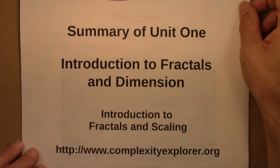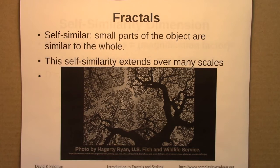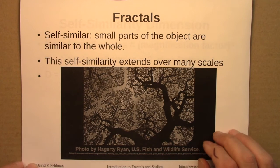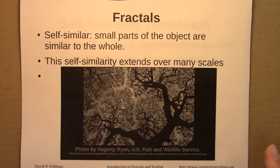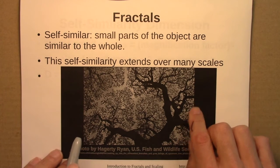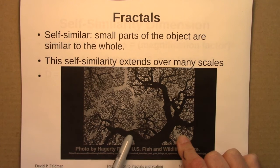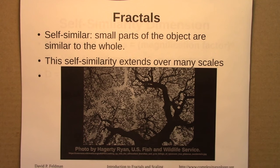Let's summarize what we've covered in this unit. I began by introducing the idea of fractals in a fairly qualitative way. Fractals are objects that are self-similar — small parts of the object are similar to the whole. We looked at several examples, one of which is the picture of the sycamore tree, where we can see branches off of which are branches off of which are branches, and they all resemble each other. For something to be said to be fractal, it needs to be self-similar over several scales.